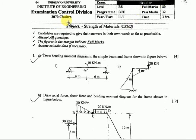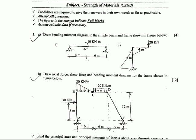Looking at the 2070 exam, question number one asks you to draw axial force, shear force, and bending moment diagrams for the given frame. It's worth four marks. Question number one is from Chapter 1, which covers axial force, shear force, and bending moment.